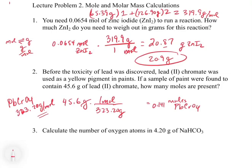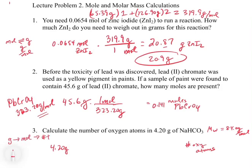The last problem asks us to calculate the number of oxygen atoms in 4.20 grams of sodium bicarbonate, NaHCO₃. First, calculate the molecular weight of NaHCO₃ by adding up the sodium, hydrogen, carbon, and three oxygens — that gives 84.0 grams per mole. This one is a bit challenging because we're going from 4.20 grams all the way to the number of oxygen atoms in that sample. This means we have to go from grams to moles, and then from moles to the number of things, using both the molecular weight and Avogadro's number.